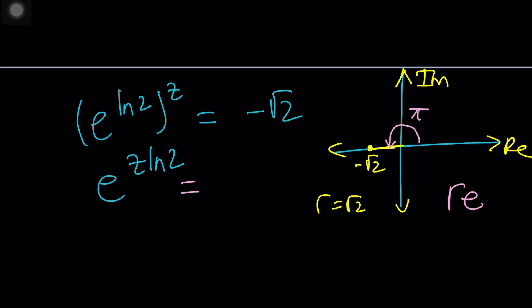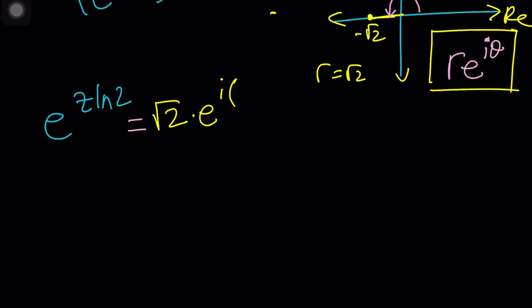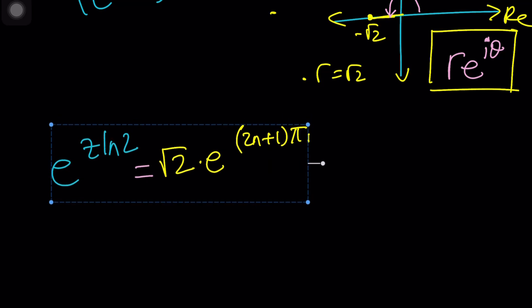So here's what we're going to do. We're going to write this as r e to the i theta. That's the polar form for any complex number with modulus r and argument theta. In this case, our modulus is root 2 and angle is pi. But don't forget to add multiples of 2 pi, which gives you basically the odd multiples of pi. Let's bring it over here. I will multiply by i on the outside. Theta is 2n plus 1 multiplied by pi.